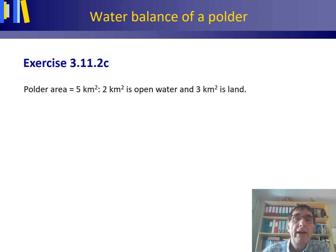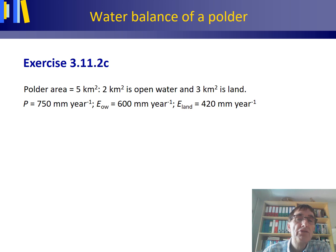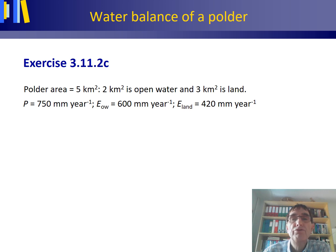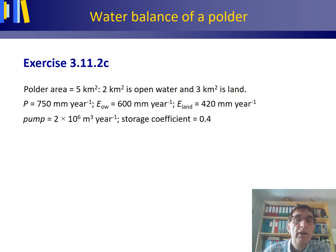We have a polder area of 5 square kilometers. The polder is made up of open water and a land part: 2 square kilometers is open water and 3 square kilometers is land. We have precipitation of 750 mm per year, open water evaporation of 600 mm per year, and evaporation from the land part of 420 mm per year. The pumping discharge is 2 times 10 to the power 6 cubic meter per year, and we have a storage coefficient for the land part of the polder of 0.4.